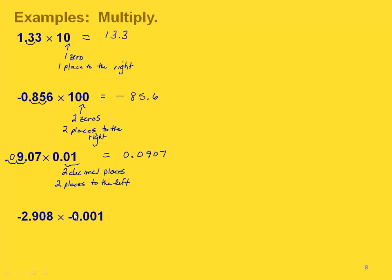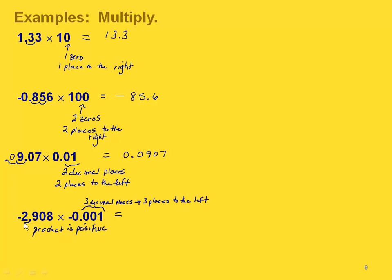One last example. Notice we have two negatives, so our product is going to be positive. We have three decimal places in our power of 10, so we're moving three places to the left. We take our number and move three places to the left — that's where the decimal point goes. We write zeros in those two places. Since we have a positive answer, no negative sign. We have a zero in front of the decimal point and two zeros to the right, then write down the rest of our digits.